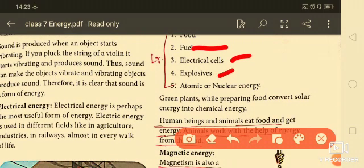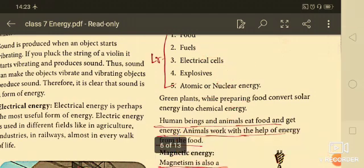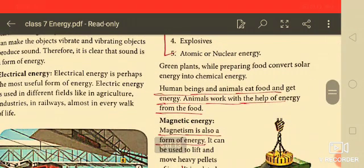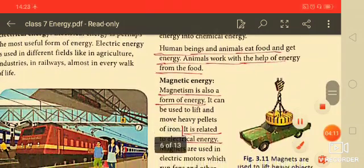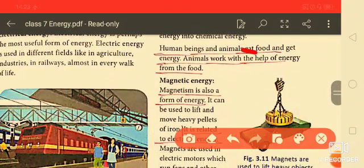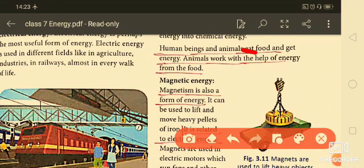Green plants, while preparing food convert solar energy into chemical energy. This is very important and human beings and animals, they eat food and get energy. Animals work with the help of energy from the food.